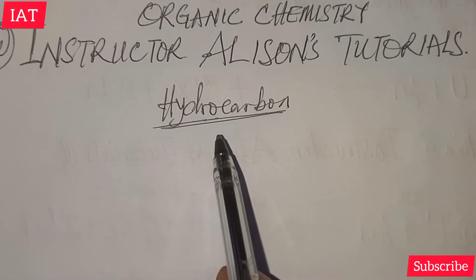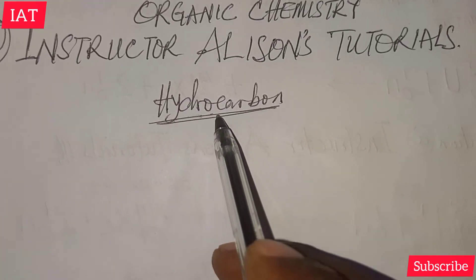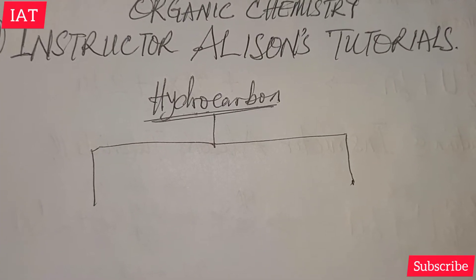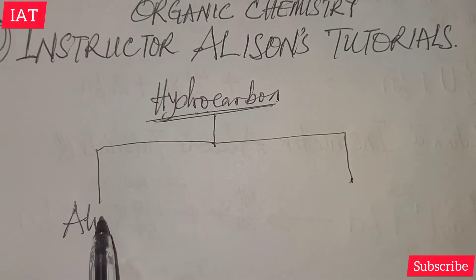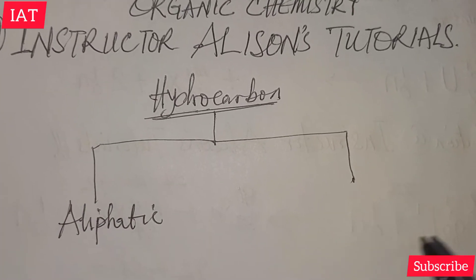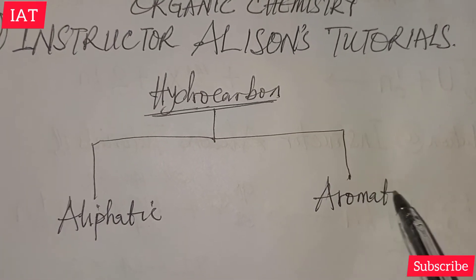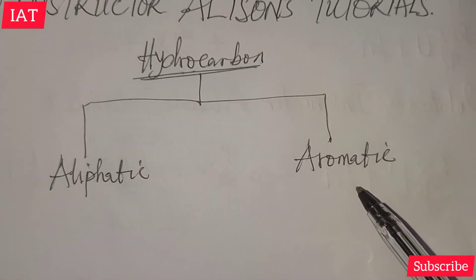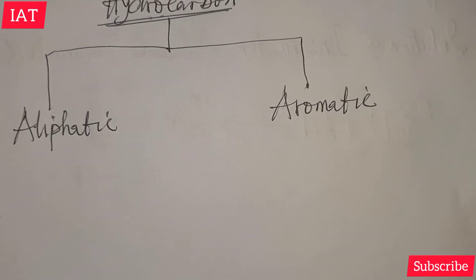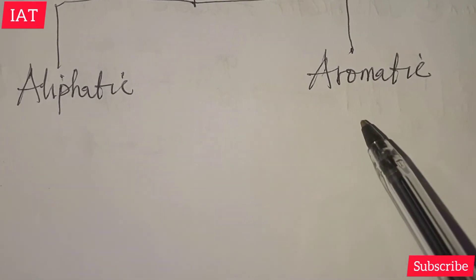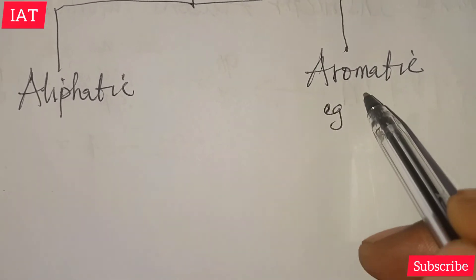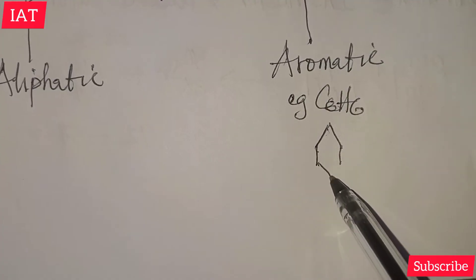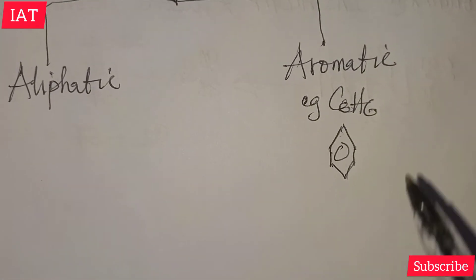When we talk about the classification of hydrocarbon, it is classified into two groups. One is the aliphatic class and the other is the aromatic class. The aromatic class consists of essentially ring chains — for example benzene or cyclopropane all fall under the aromatic group.